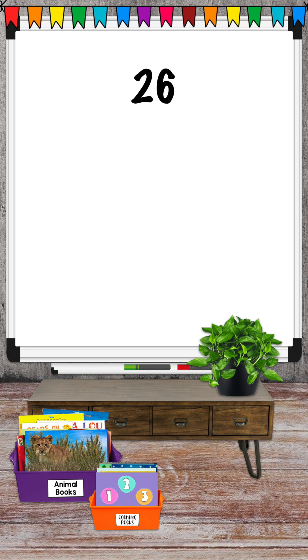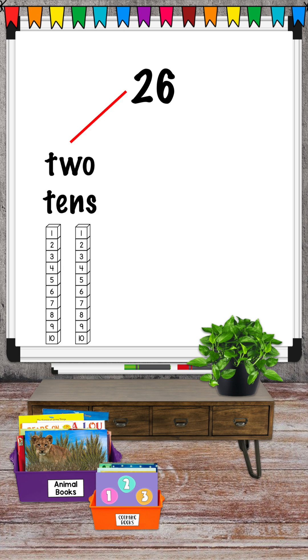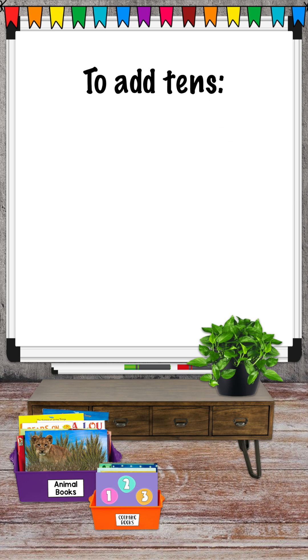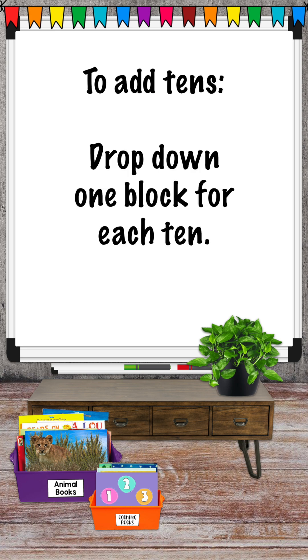Look at 26. 26 has two tens and six ones. We'll add the two tens first. To add the tens, we drop down one block for each ten.